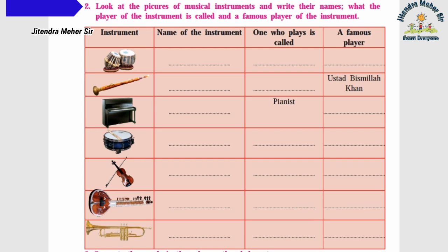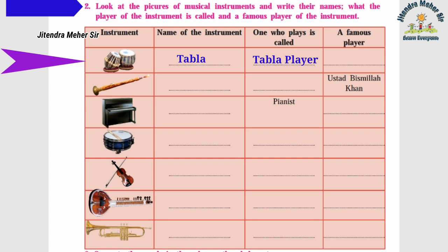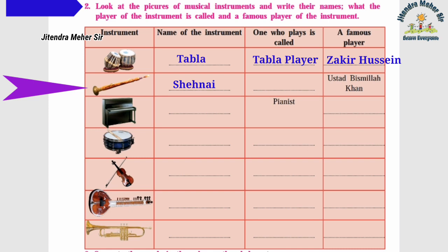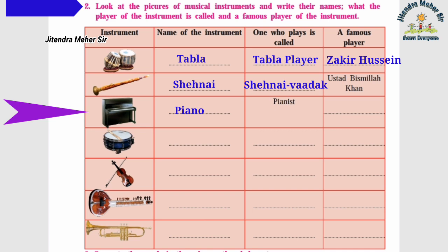Activity number two: look at the pictures of musical instruments and write their names, what the player is called, and a famous player. First instrument: tabla — player called tabla player or tablchi, famous player Zakir Hussain. Second: shehnai — player called shehnai wadak, famous player Ustad Bismillah Khan. Third: piano — player called pianist, famous player Anil Srinivasan.